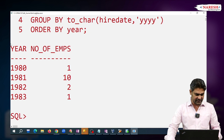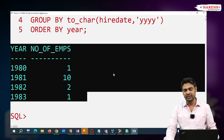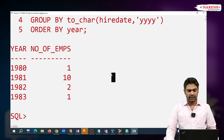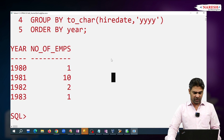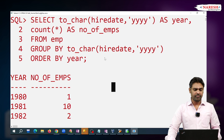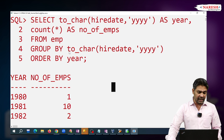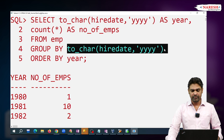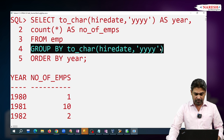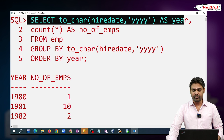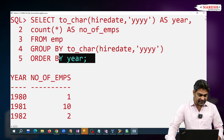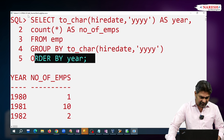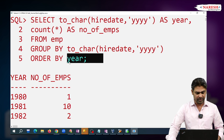Observe — it is giving year-wise number of employees. So till Oracle 21c, we cannot use column alias in GROUP BY because GROUP BY gets executed before SELECT. But ORDER BY gets executed after SELECT, so we can use the alias name in ORDER BY.